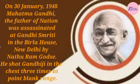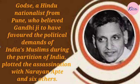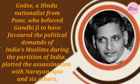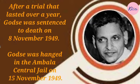On 30th January 1948, Mahatma Gandhi, the father of the nation, was assassinated at Gandhi Smriti in Birla House, New Delhi, by Nathuram Godse. He shot Gandhiji in the chest three times at point-blank range. Godse, a Hindu nationalist from Pune, believed Gandhiji had favoured the political demands of India's Muslims during the partition of India, and plotted the assassination with Narayan Apte and six others. After a trial that lasted over a year, Godse was sentenced to death on 8th November 1949 and was hanged in Ambala Central Jail on 15th November 1949.